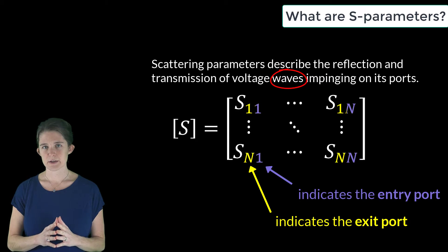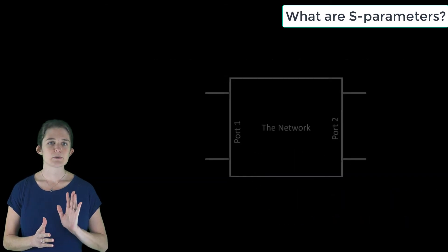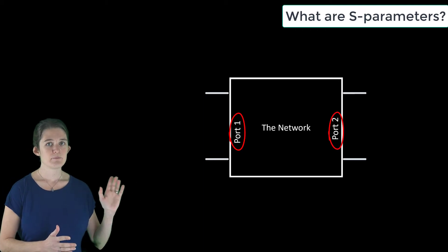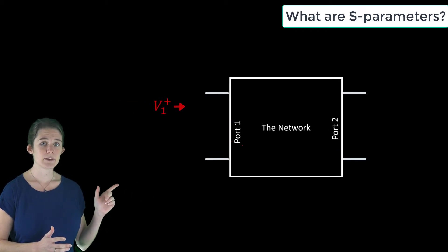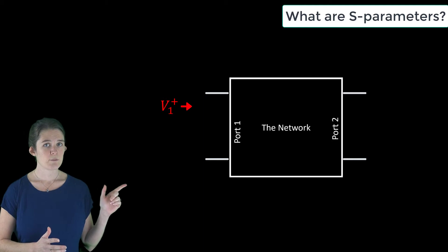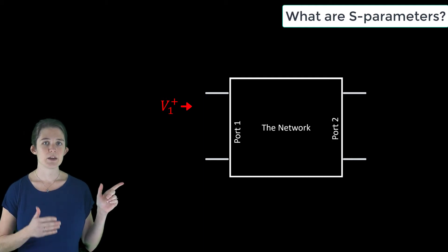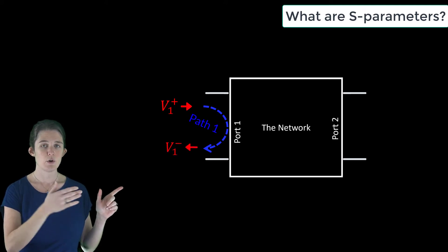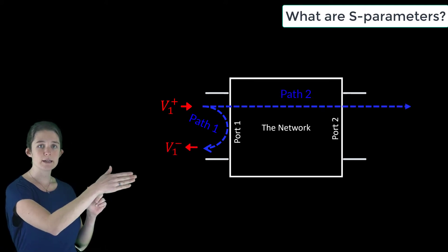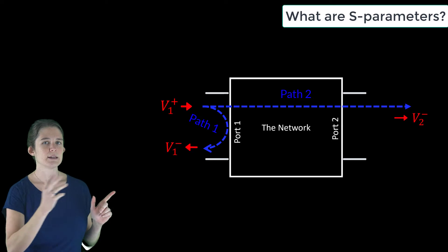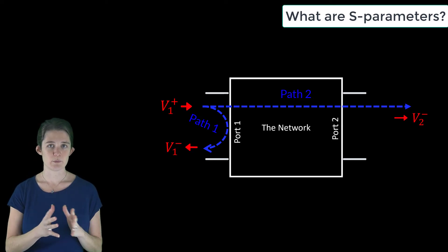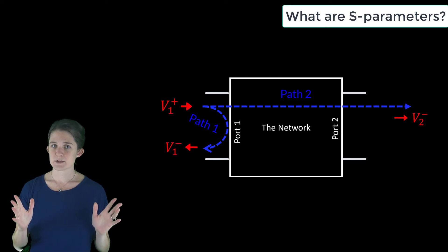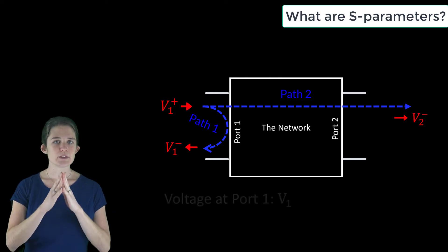Consider a two-port network with port one on the left and port two on the right. Energy input from the left as a voltage wave may follow one of two paths: it may either reflect off port one and transmit back toward the source, or it may transmit through the network and exit at port two. It is likely that some portion of the wave will follow each of these paths.